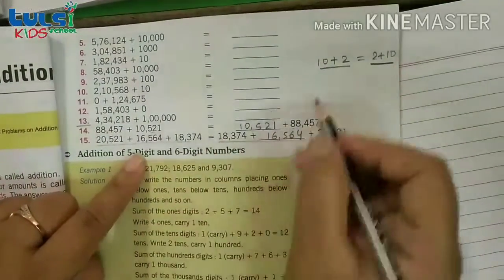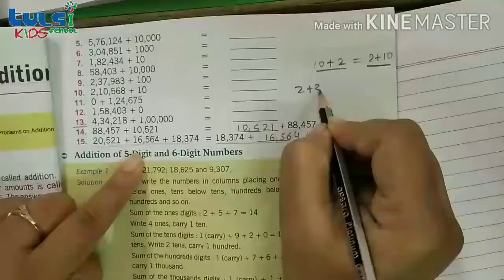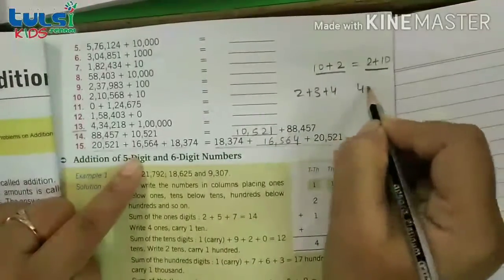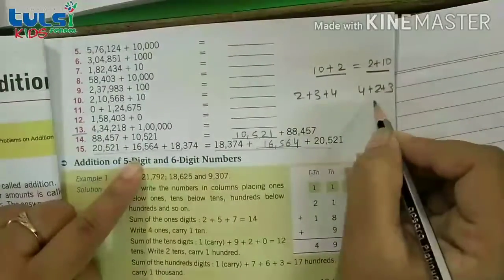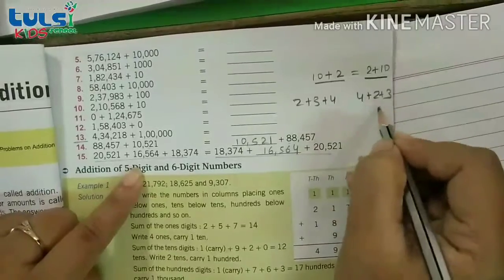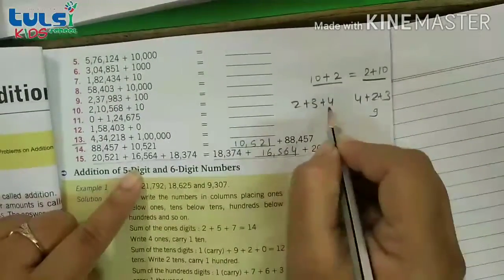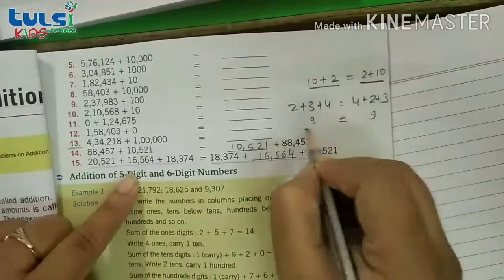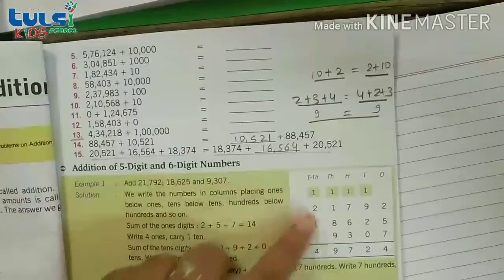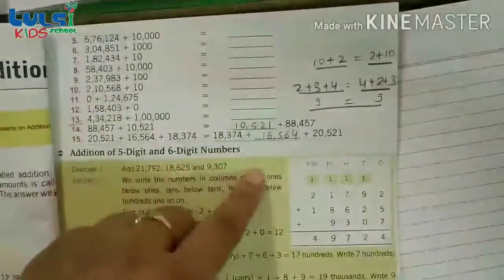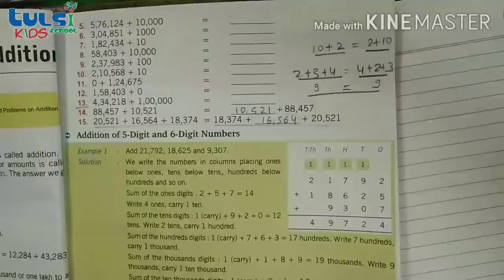Jaisa maine aapko yaha samjhaya, 2 plus 3 plus 4 karate hai yaha phir 4 plus 2 plus 3 karate hai, answer kitna aeega? 9. Toh answer kaisa aaya? Same. Toh bas yaha par aap sirf digit ulta ulta kiya hua hai. Toh is tarikhe se aap log yeh question bhi solve karenge, okay?